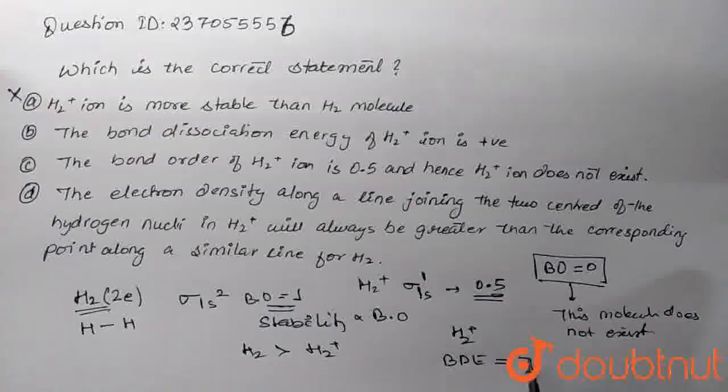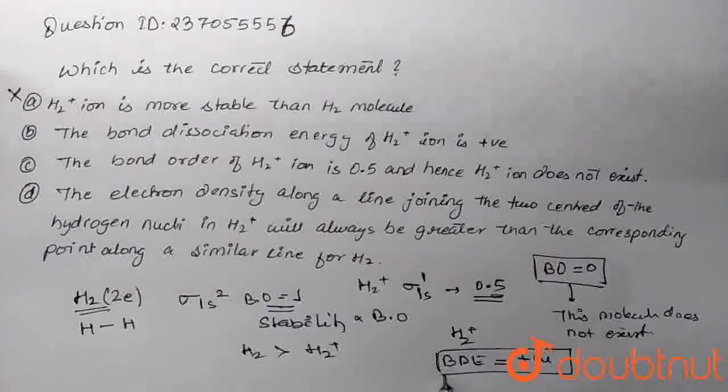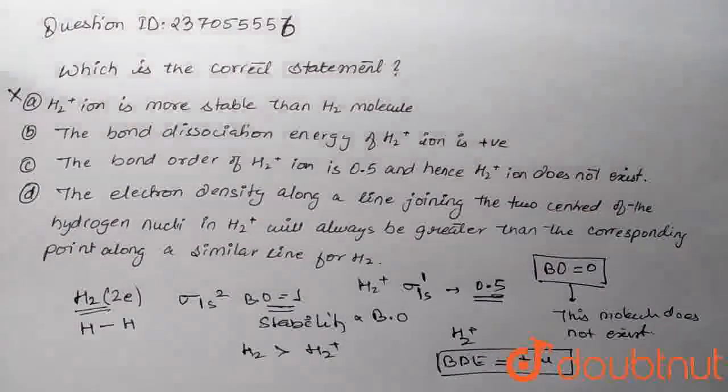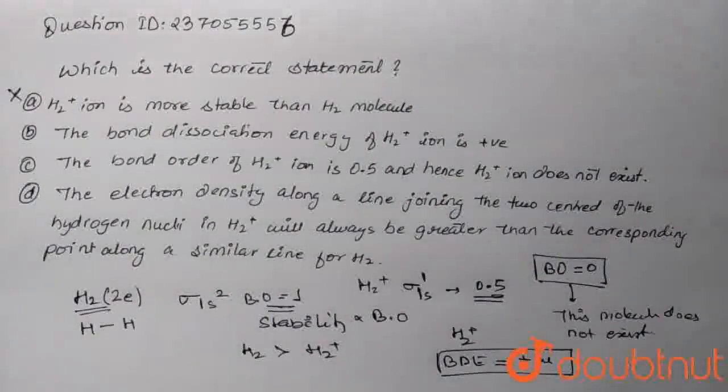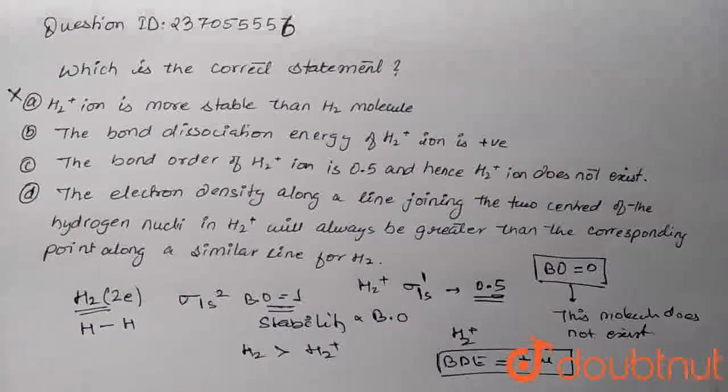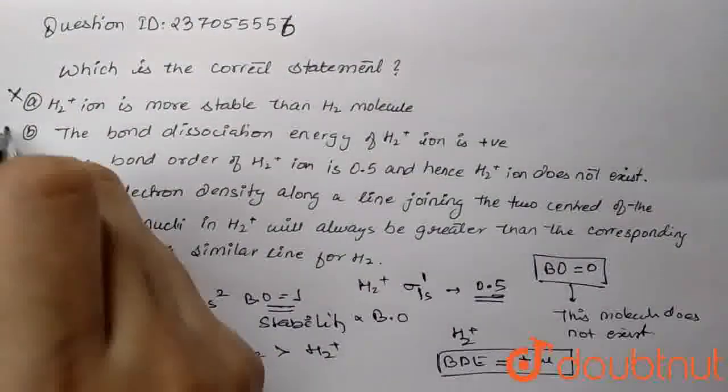If bond order is zero, interaction is zero, because bond order calculates the interaction, right? But its bond order is 0.5, so its bond energy, bond dissociation energy will be positive. It will have some energy. If the molecule exists, then its bond dissociation energy will also exist and be positive. So this statement is correct.